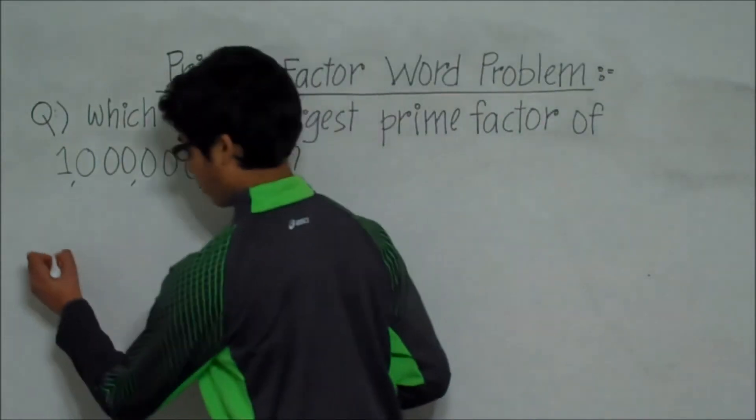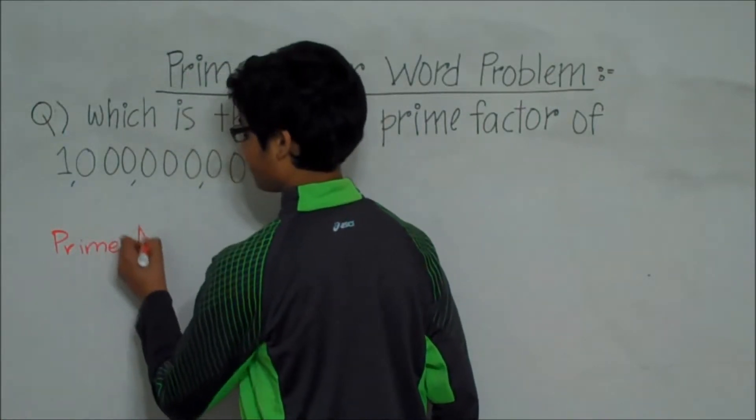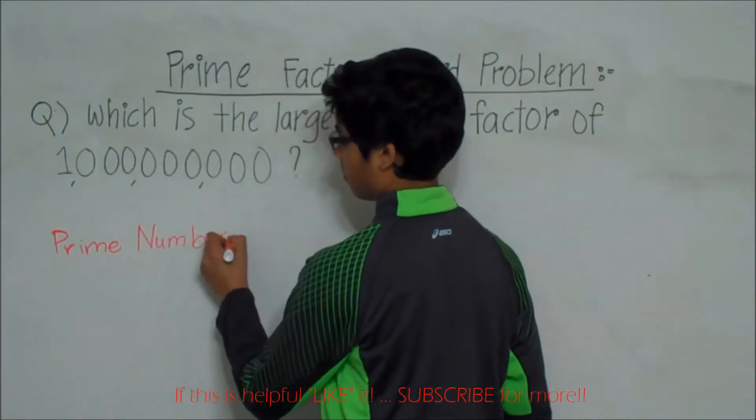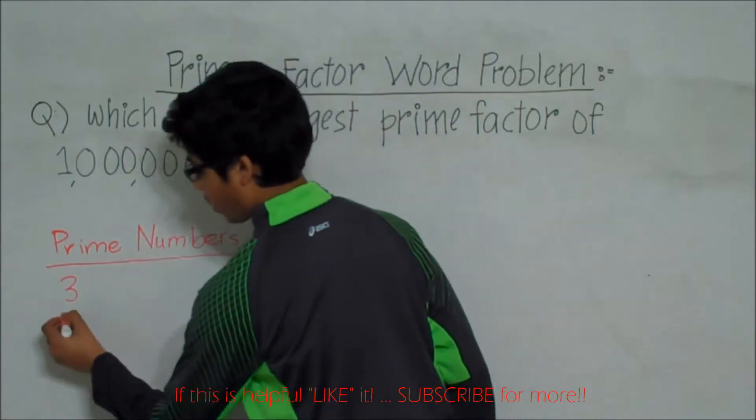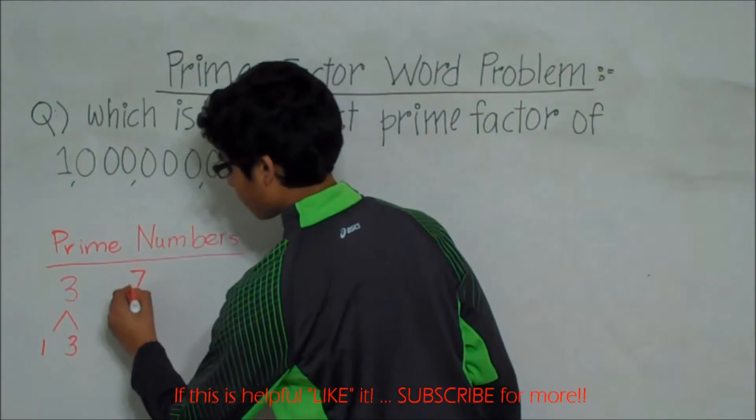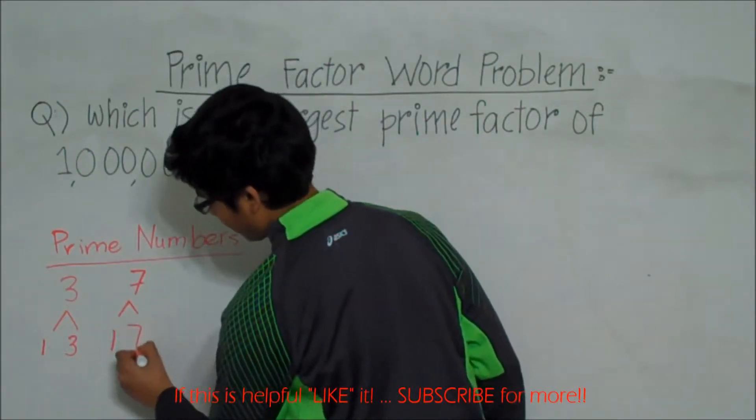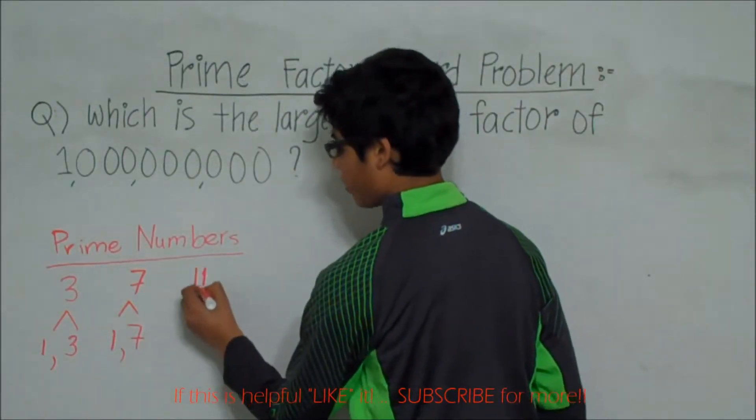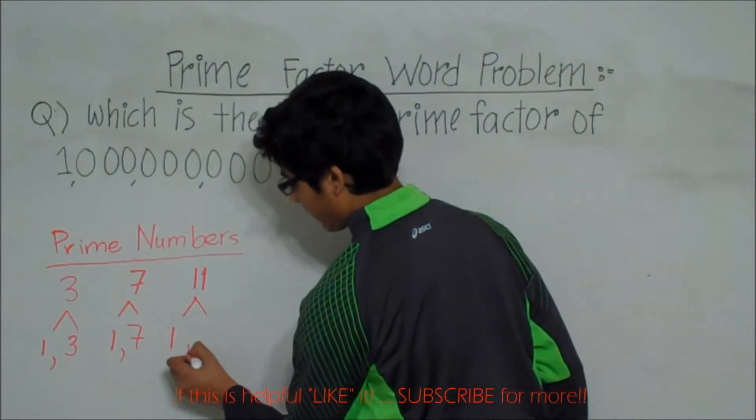Some examples of prime numbers are 3, which has only the factors of 1 and 3. 7, which has only the factors of 1 and 7. Or 11, which has only the factors of 1 and 11.